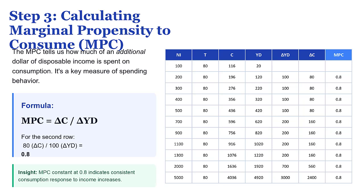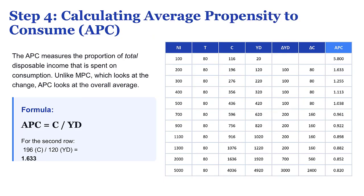We have all the pieces of the puzzle: the change in our income and the change in our spending. Now we are ready to calculate the marginal propensity to consume. It just answers one simple question: if you get an extra dollar of income, how much of that exact dollar are you going to spend? It's the fraction of any new money that goes straight to buying stuff. The formula is beautiful because it's so simple: you take the change in consumption — that's Delta C — and divide it by the change in disposable income, our Delta YD. So let's plug our numbers in: the change in consumption was 80 and the change in income was 100. So 80 divided by 100 is 0.8.